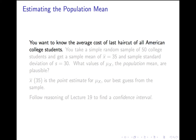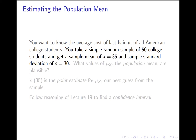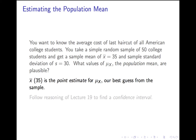Let's say we want to know the average cost of the last haircut of all American college students. We take a simple random sample of 50 college students and get a sample mean x-bar of 35 and a sample standard deviation of 30. So what values for the population mean mu sub x are plausible? x-bar equals 35 is our point estimate for mu sub x — our best guess from the sample — but we'd like to know what are plausible values.